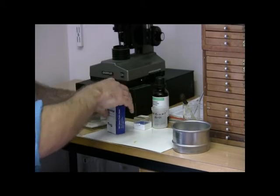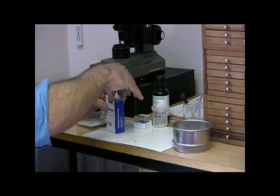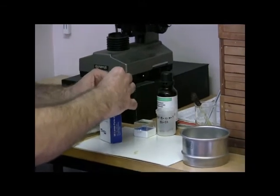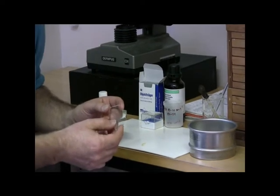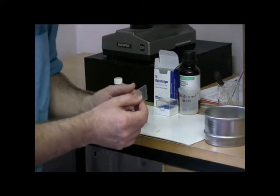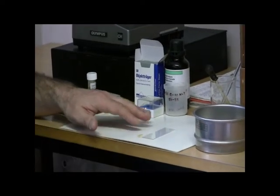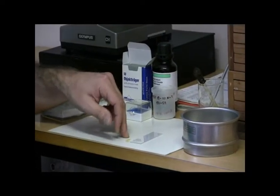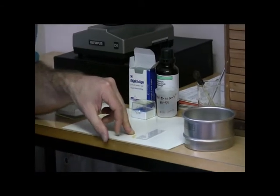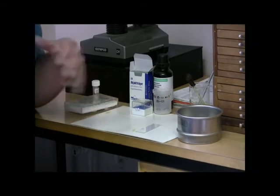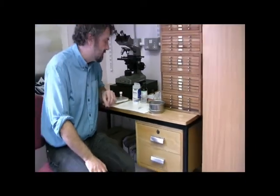What we would do is use microscope slides like this, glass microscope slides, to enable us to look at radiolaria under a transmitted light microscope, similar to the one that's behind me. We would want to put this on a firm surface or ideally we need to put this on a warm hot plate, but I haven't got one here on the desk at the moment.